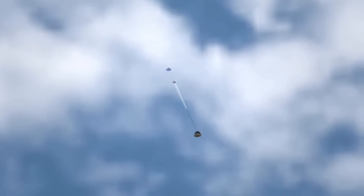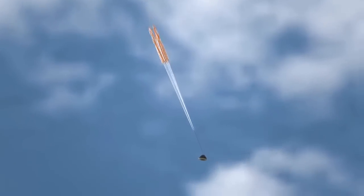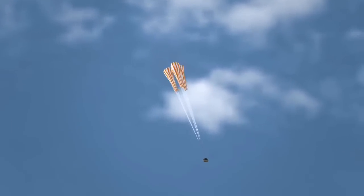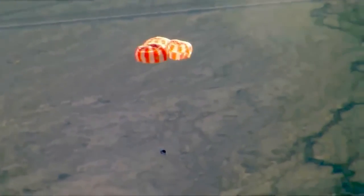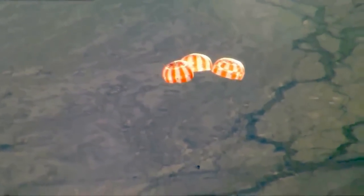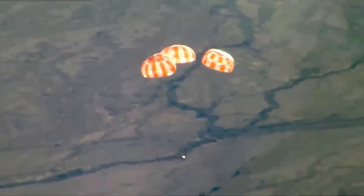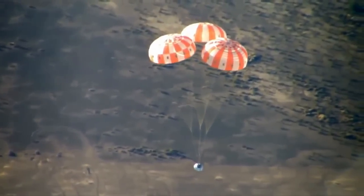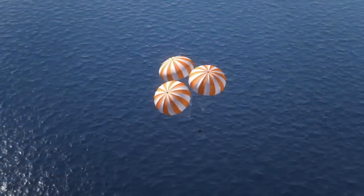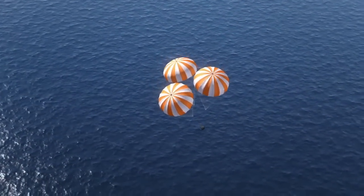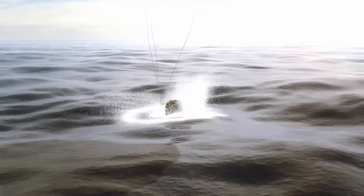Then, the three main parachutes opened. Once fully engaged, this canopy would cover an American football field. It takes parachutes this size and strength to slow our descent to 20 miles per hour. And then, splashdown.